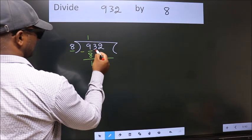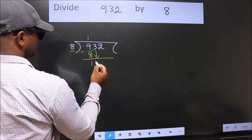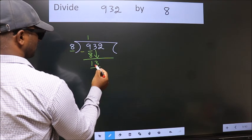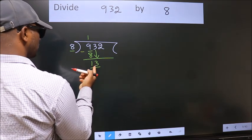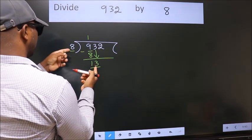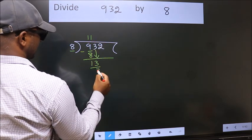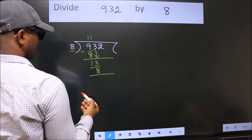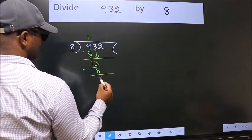After this, bring down the beside number. So, 3 down. So, 13. A number close to 13 in the 8 table is 8 once 8. Now we subtract. We get 5.